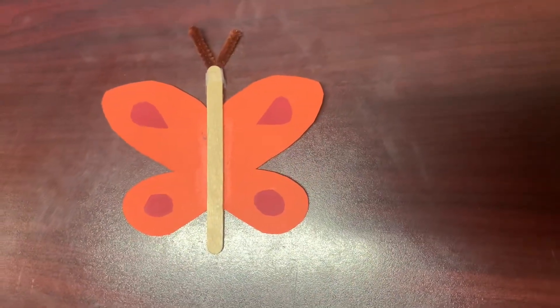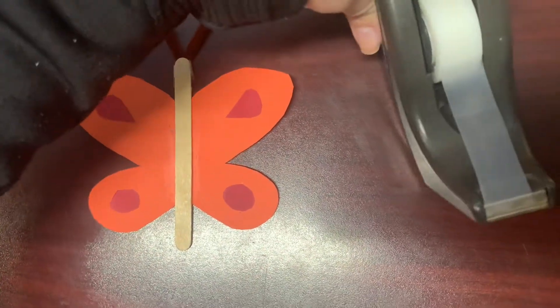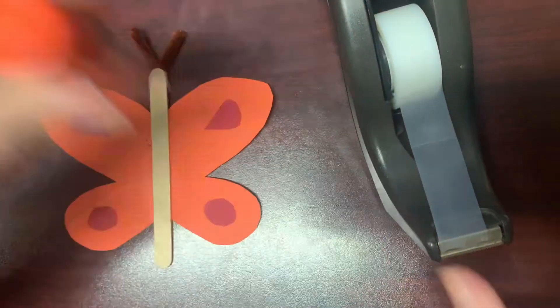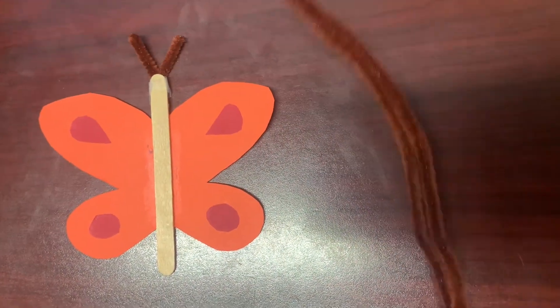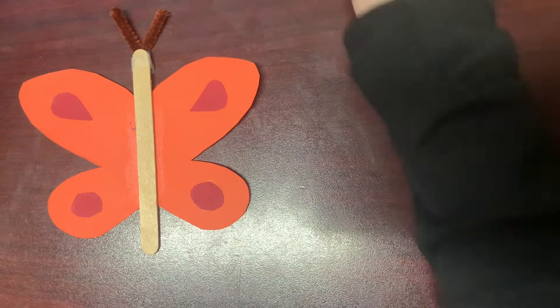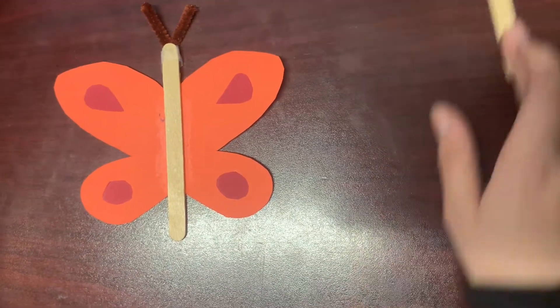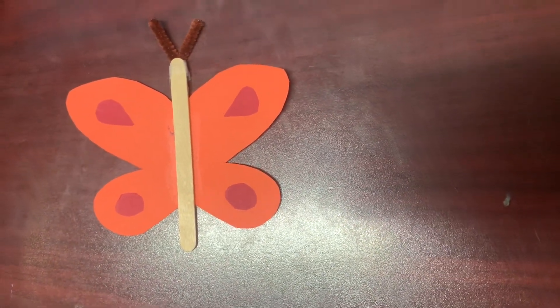So if you don't have a glue gun, you're going to need some tape and some glue. You're going to need these, two of these, a popsicle stick, a pencil, and whatever color you want, two coloring pages.